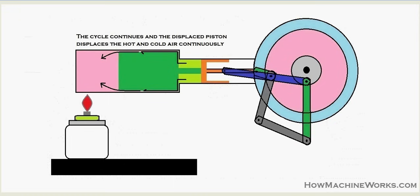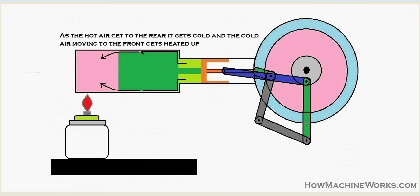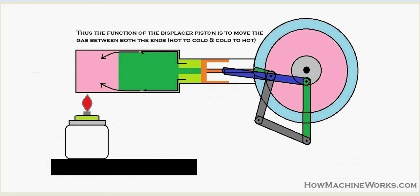As the green displacer piston moves towards the rear, it results in the movement of cold air to the front of the engine. The cycle continues and the displacer piston displaces hot and cold air continuously. As the hot air gets to the rear it gets cold, and the cold air moves towards the front and gets heated up by the alcohol or kerosene burner. The function of the displacer piston is to move the gas between both ends — from the hot to the cold region, and from the cold region back to the hotter region.